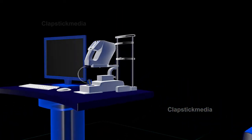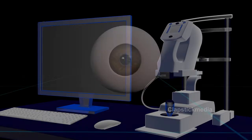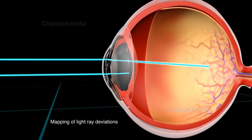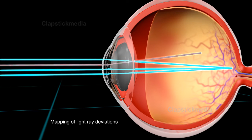Next, using a device called a wavefront aberrometer, we map each ray of light entering your eye. This lets us see exactly how the light deviates as it passes through each irregularity and where it ultimately lands up on your retina.